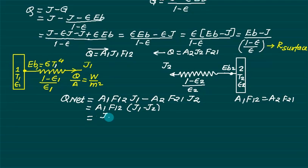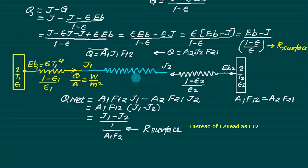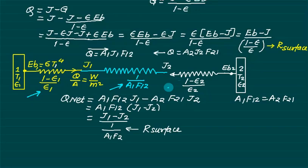In resistance form, Q = (J1 − J2) / [1/(A1·F12)]. This resistance 1/(A1·F12) is called the space resistance. In total, there are three resistances: the surface resistance for body 1, the space resistance between them, and the surface resistance for body 2. Heat transferred from body 1 to body 2 encounters all three resistances in series.